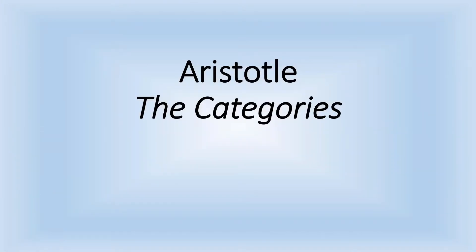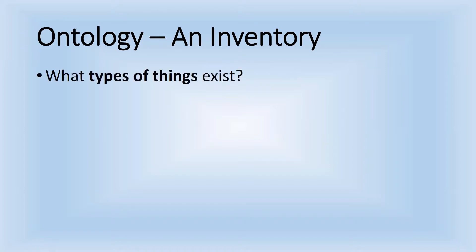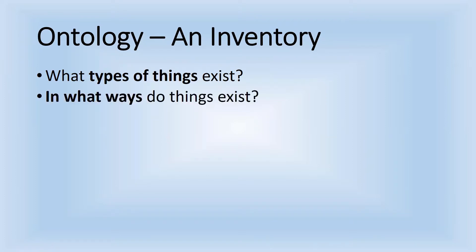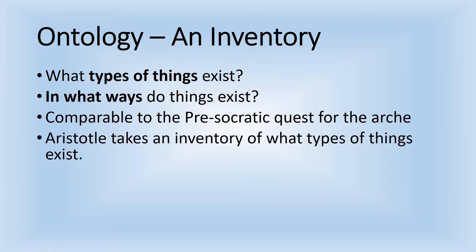We are looking at Aristotle's book on the categories, probably the earliest book in metaphysics that we have. What he's doing in this book is ontology — he's roughly taking an inventory of what exists. And if you're going to take an inventory of a store or a business, you need to organize it, you need to put things into categories. So the first question Aristotle is pursuing is what types of things exist, and in what ways do things exist?